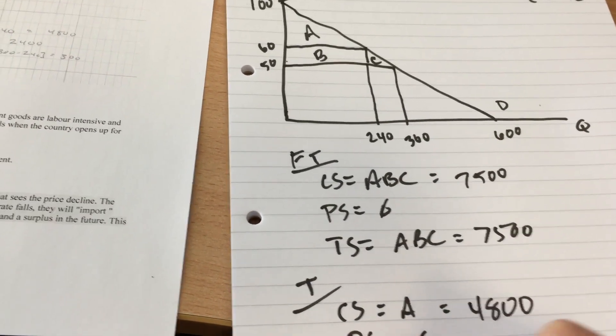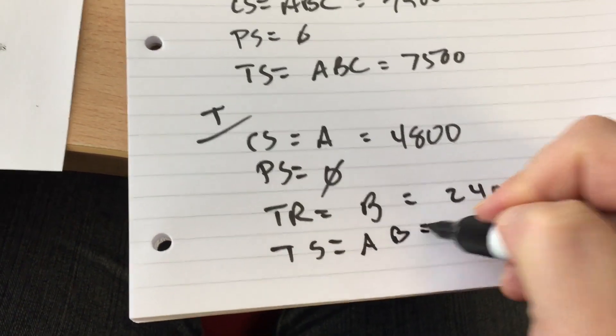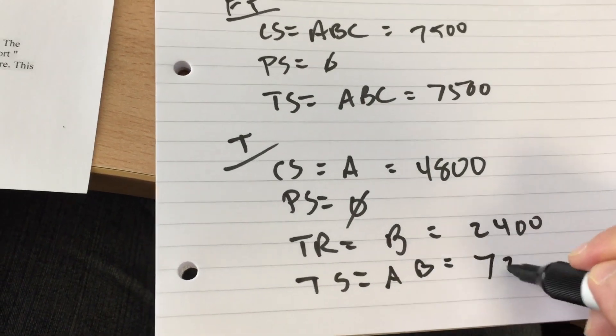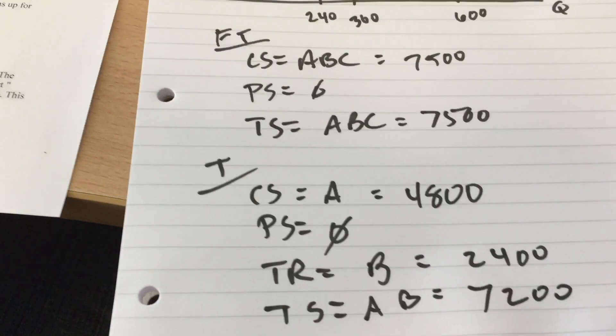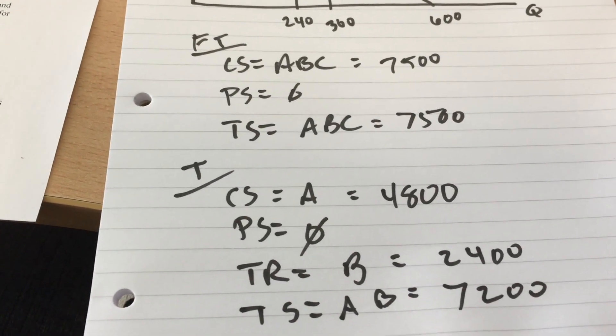So total surplus is going to be A plus B, which is a grand total of 7,200. So total surplus falls by 300 when we add on this tariff in this particular example.